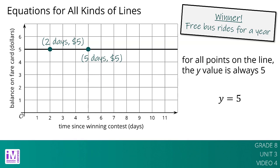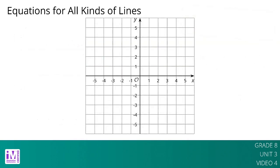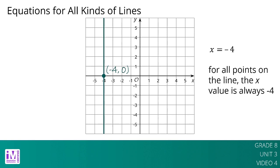Every point on this line makes the equation y equals 5 true. Vertical lines, on the other hand, represent situations where the x value doesn't change at all while the y value changes. The equation x equals negative 4 describes a vertical line. Every point on this line makes the equation x equals negative 4 true. We can describe this vertical line as: for all points on the line, the x value is always negative 4.